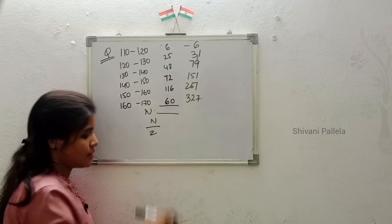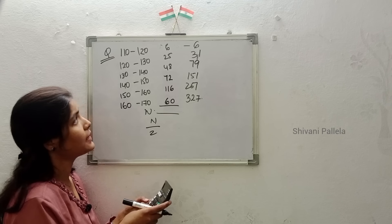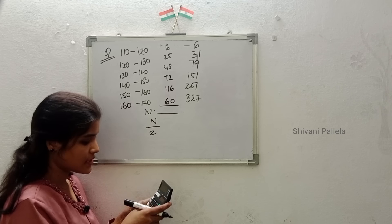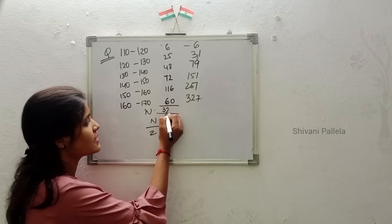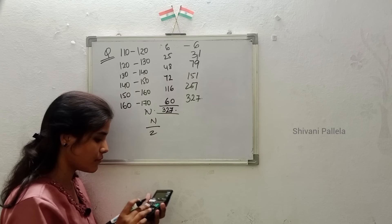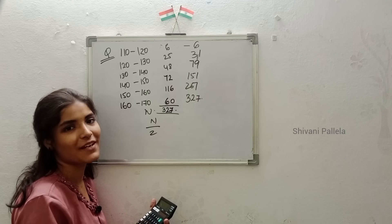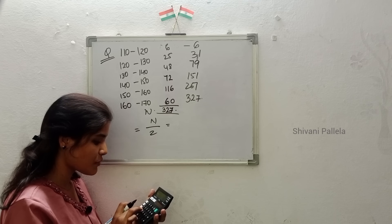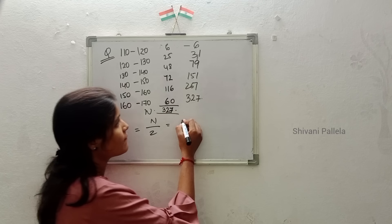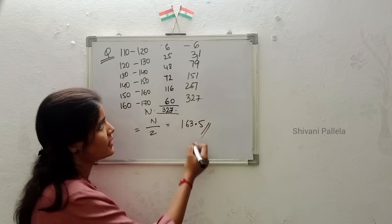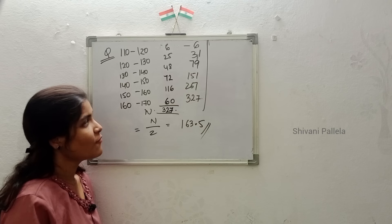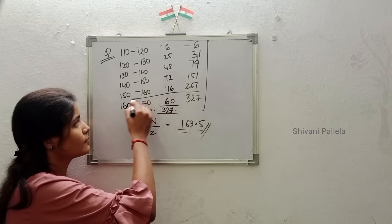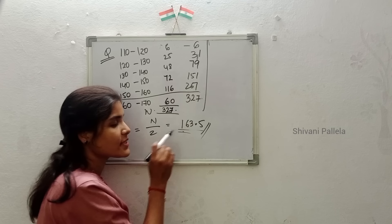Total frequency n equals 327. So n divided by 2 equals 327 divided by 2 equals 163.5. In the cumulative frequency column, where does 163.5 lie? Here 151 is below 163.5 and the next cf value is 267, so 163.5 falls in the class 150–160.